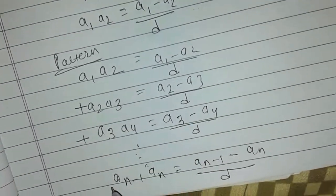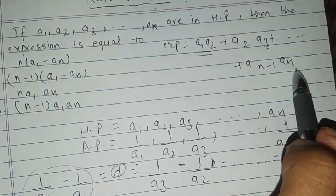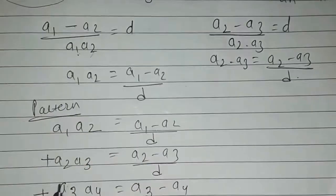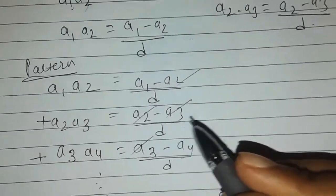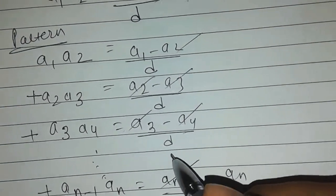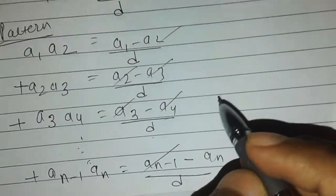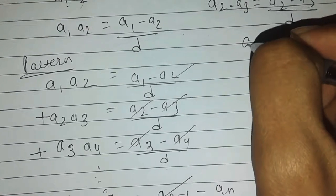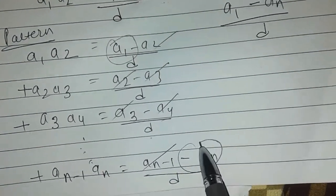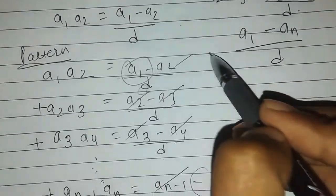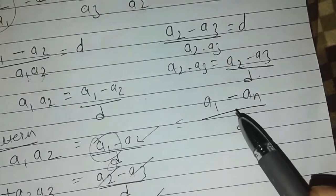Let us add all the terms: a1·a2 + a2·a3 + ... + a(n-1)·an. While adding, the intermediate terms cancel out each other due to their negative signs — a2 cancels, a3 cancels, and so on through the middle terms. What remains is (a1 minus an) divided by d.